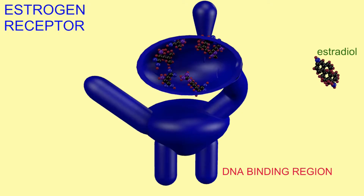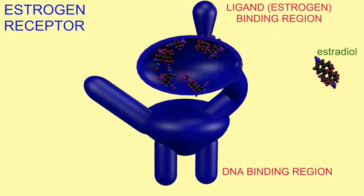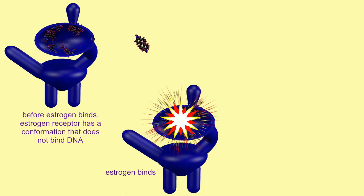The estrogen receptor has a number of regions, including the DNA binding region, and the region which binds its ligand, estrogen. I'm using in this example the major estrogen, estradiol. The receptor binds estradiol because of a pocket made by specific amino acids, especially arginine, glutamic acid, leucine, alanine, another leucine, and a histidine in precise locations, which allow it to bind estradiol.